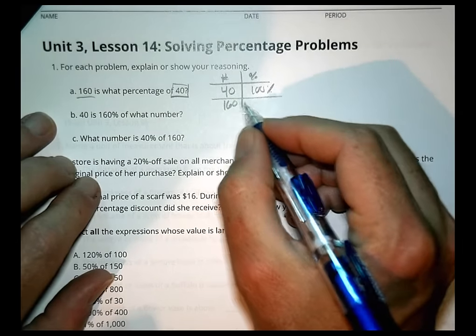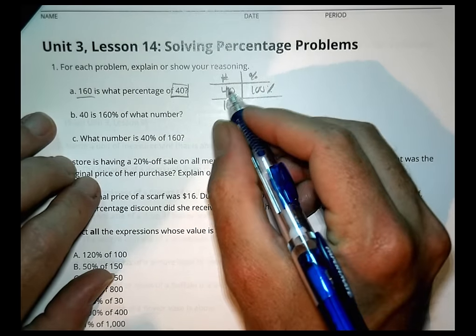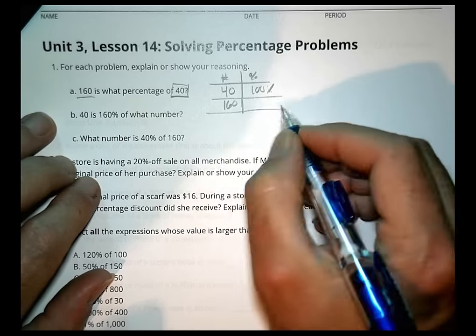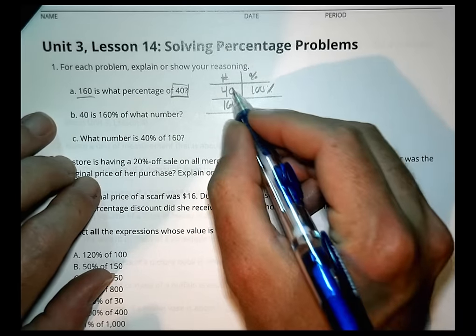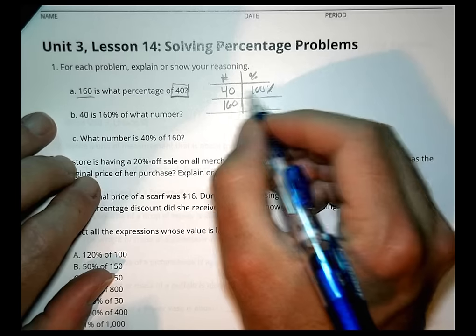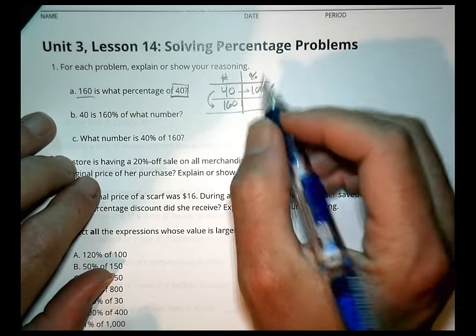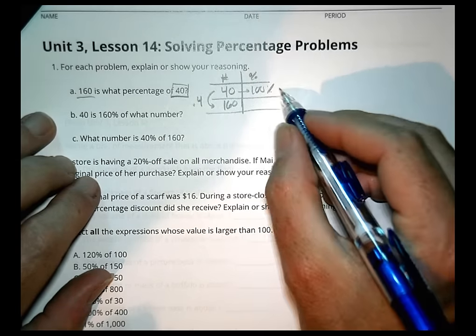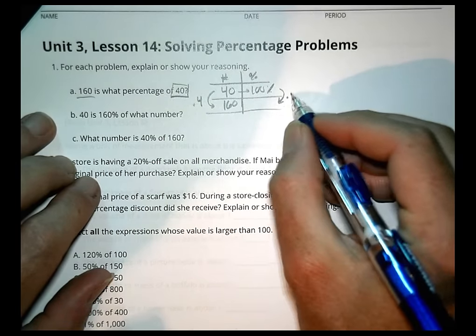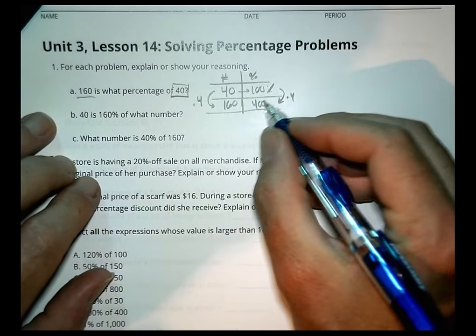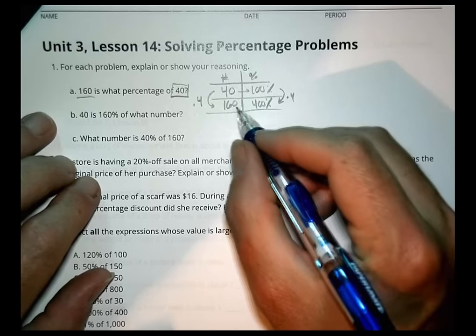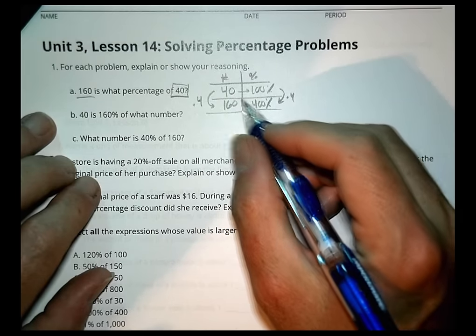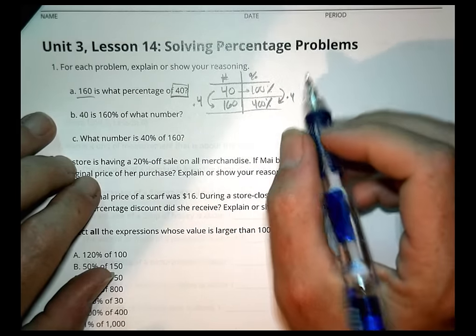We know that 40 is 100% because that's what we're starting from. We want to find out what 160 is as a percentage of 40. 40 is our baseline, 100%. How do I go from 40 to 160? I'm going to multiply by 4. If I do 100% times 4, I end up with 400%. 160 is 400% greater than 40.